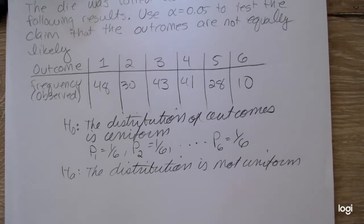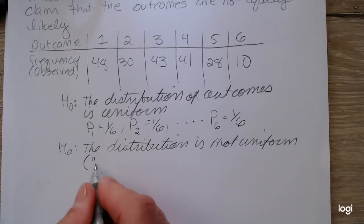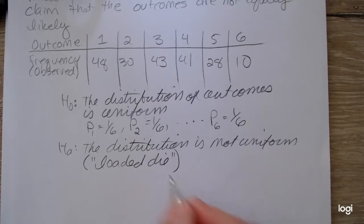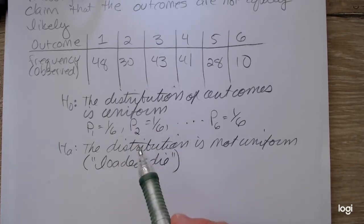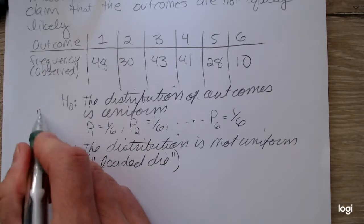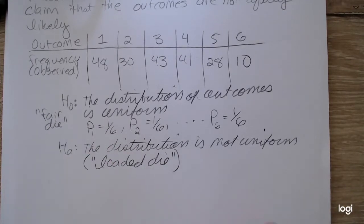Now, if the distribution is not uniform, this would be the case where we have a loaded die. And if the distribution is uniform, this would be the case where we have a fair die.